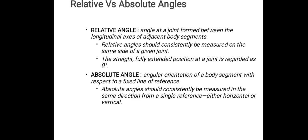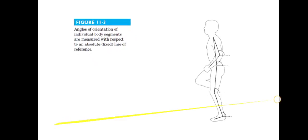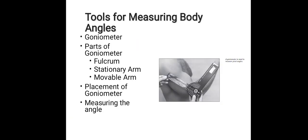Absolute angle is the orientation of a body segment with respect to a fixed line of reference — either horizontal or vertical. In contrast, relative angle is measured between adjacent body segments. Absolute angle should constantly be measured in the same direction from a single fixed reference. Relative angles are angles between adjacent body segments, while absolute angles are made with respect to a fixed position.